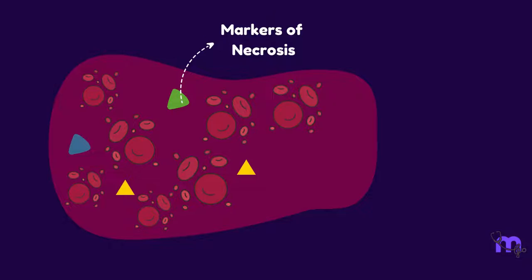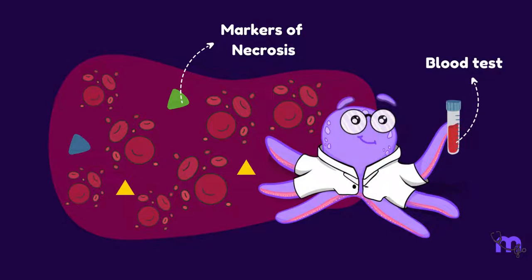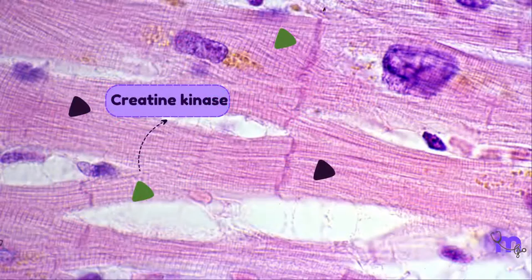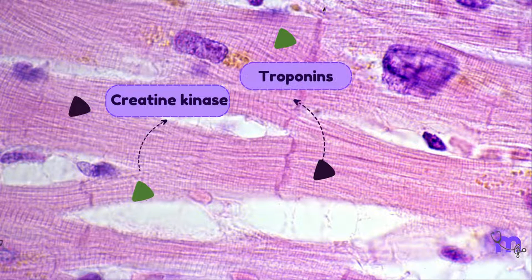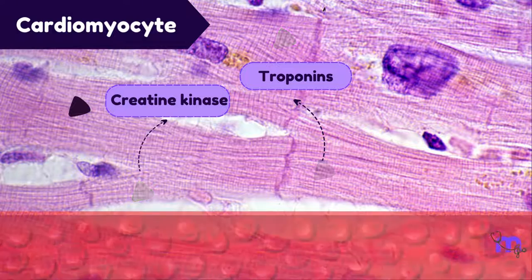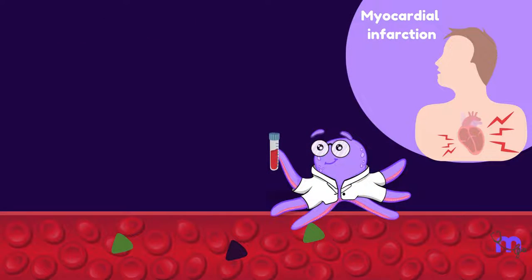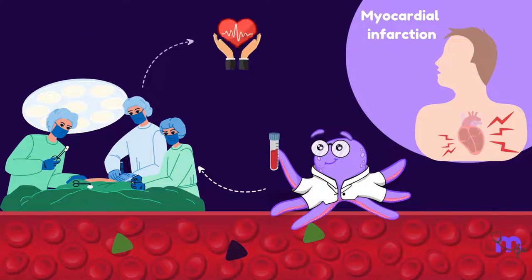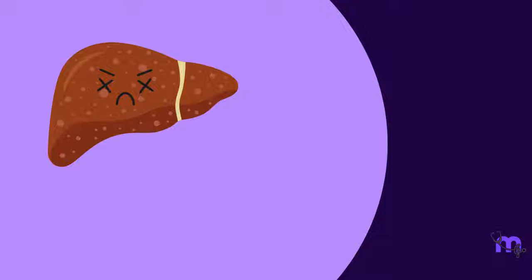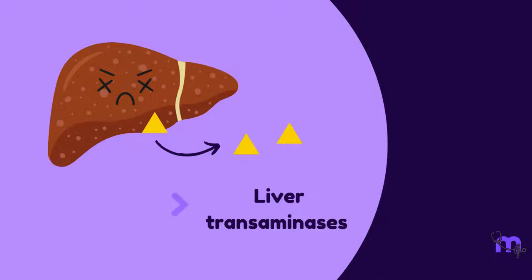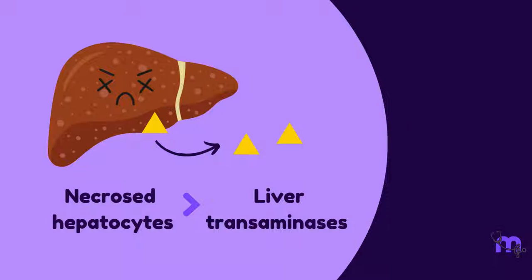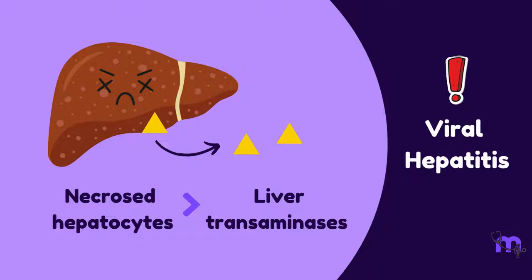Markers of necrosis can be detected in blood tests that can help save lives. Creatine kinase and troponins are enzymes normally present in a cardiomyocyte. In case of a myocardial infarction, the necrosed cells release these enzymes into the bloodstream — if picked up early, immediate intervention can be life-saving. Similarly, liver transaminases are released from necrosed hepatocytes and are markers of viral hepatitis.